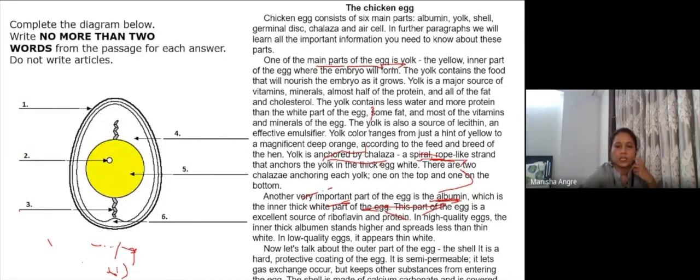And then we have, let's now talk about the outer part of the egg, that is the shell. So the outer part of the shell, that is number one, and it is hard protective coating of the egg.